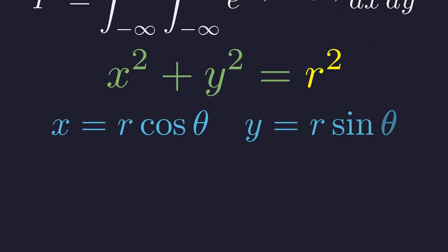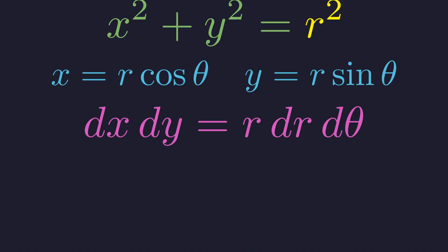In polar coordinates, x equals r cosine theta and y equals r sine theta. The area element transforms with an extra factor of r. This is the Jacobian of the transformation. This r factor is important. It accounts for how area elements scale in polar coordinates.